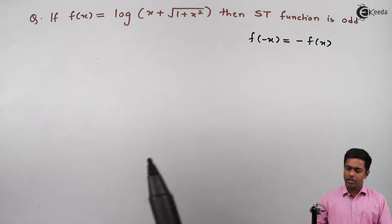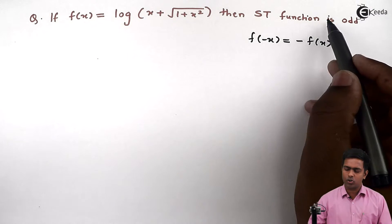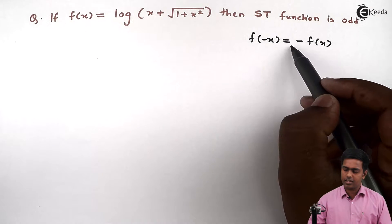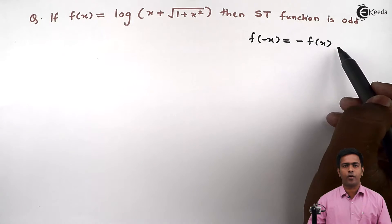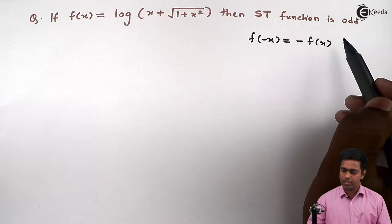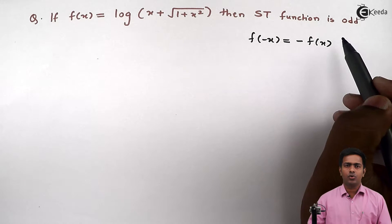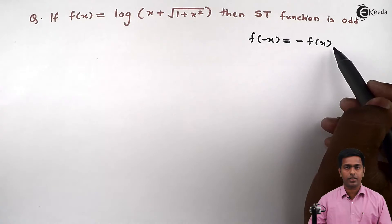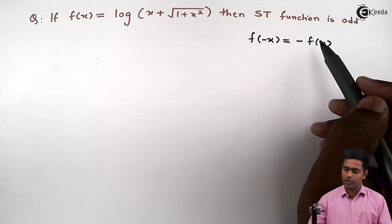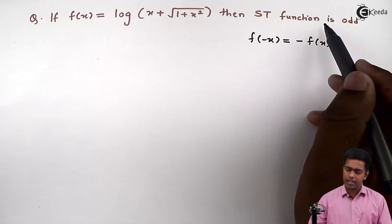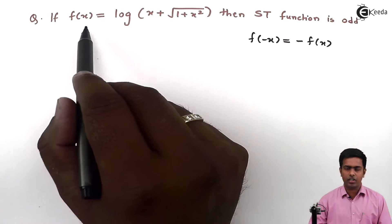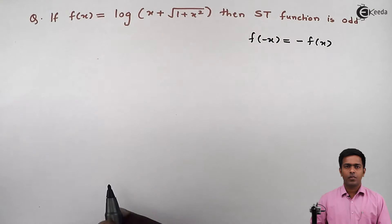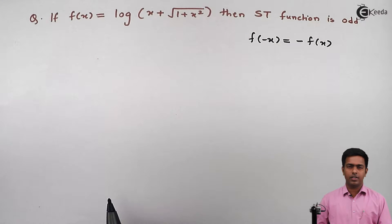So it means here we have to show that f(-x) is equal to -f(x), and if we succeed in showing that f(-x) = -f(x), then only we will say that yes, this function f(x) is an odd function. So let us start with this.